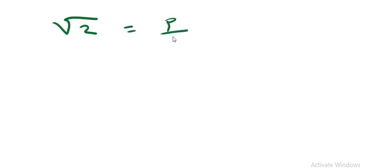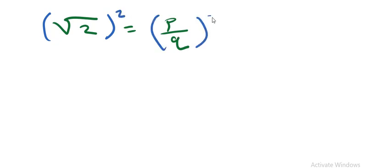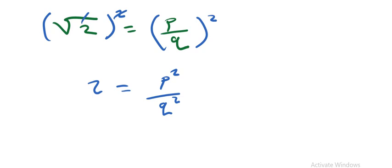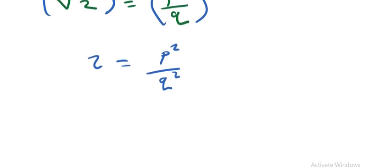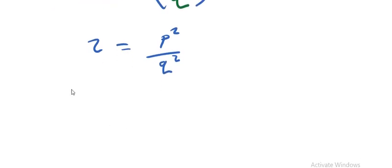From this point, the only thing needed is to get rid of this square root by squaring both sides. So we have 2 is equal to p squared over q squared. After doing that, we cross multiply, and we get 2q squared is equal to p squared.